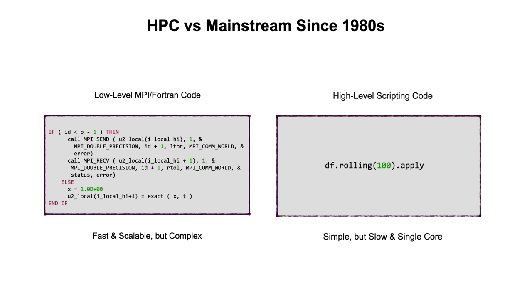On the other hand, mainstream analytics programmers have been writing high-level scripting code in tools like MATLAB and now mostly Python, which are very simple and can do a lot with a few lines of code. The problem with these programs is that they are slow and single-core, so they don't scale well at all. This difference has been a large gap for 40 years, and in computer science it's typically called the productivity-performance gap.